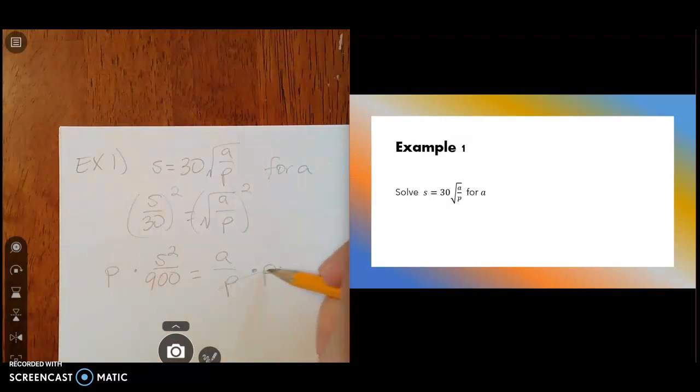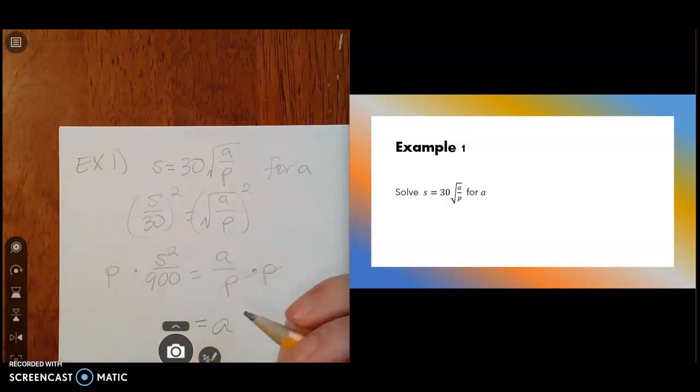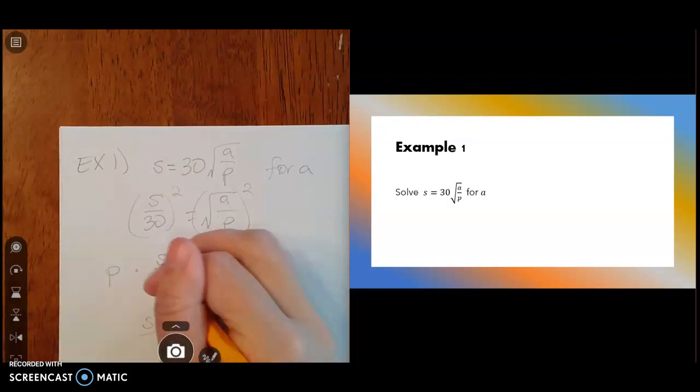So these will divide out. That'll be a 1. And then we'll have an A on the right side. On the left side, it doesn't really matter if you put the P first or second, as long as it's there. So we'll have like S squared P or P S squared over 900 equals A.